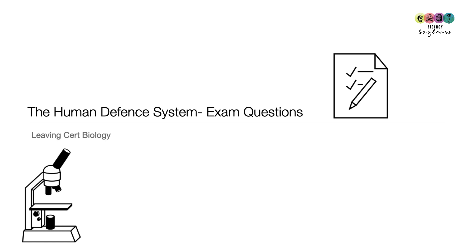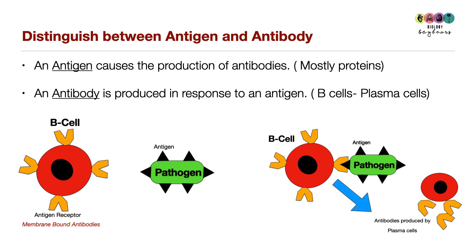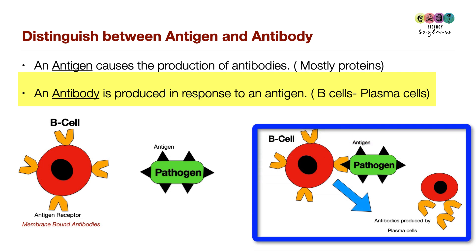This video looks at exam questions on the human defence system. A common question is to distinguish between antigen and antibody. An antigen causes the production of antibodies; they are mostly protein, though some are carbohydrate-based. An antibody is produced in response to an antigen, and it is the B cells — particularly plasma B cells — that produce antibodies.